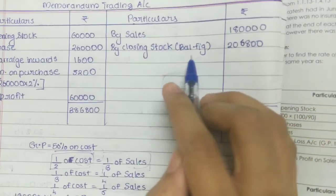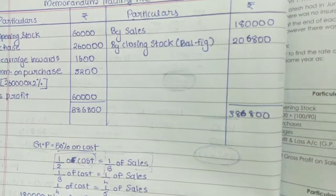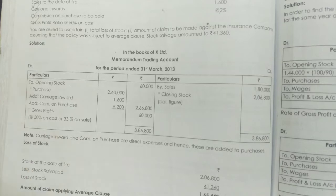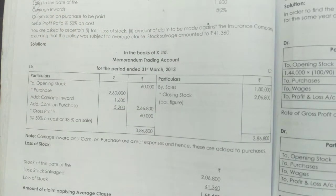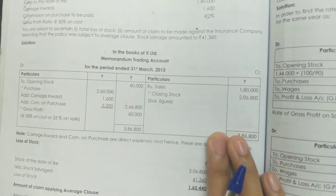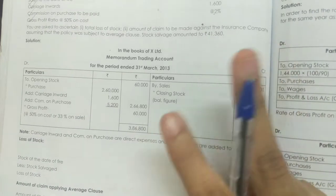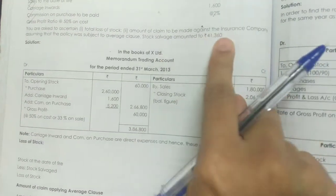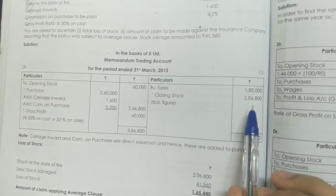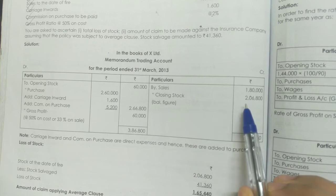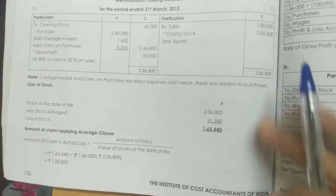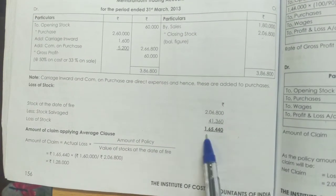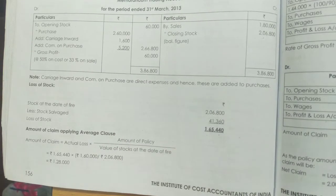Totalling both sides of the memorandum trading account, we get closing stock as the balancing figure: 2,06,800. Now we know the stock on hand at the time of fire. The next step is to find the actual loss. Actual loss = closing stock − stock salvaged = 2,06,800 − 41,360 = 1,65,440. So 1,65,440 is the amount of actual loss.